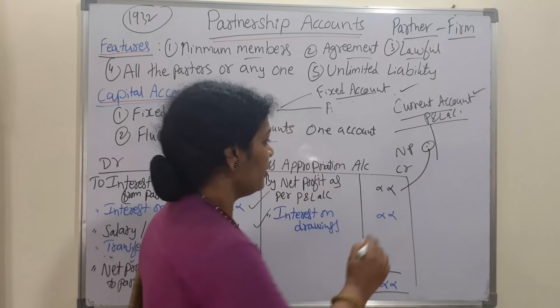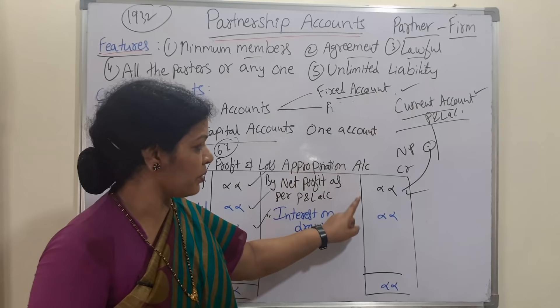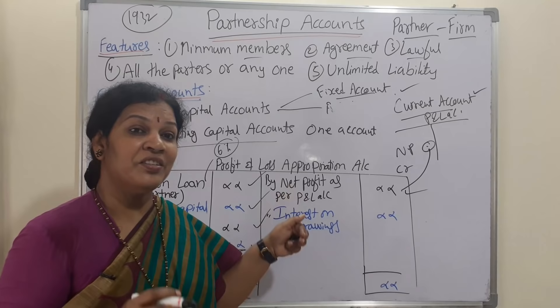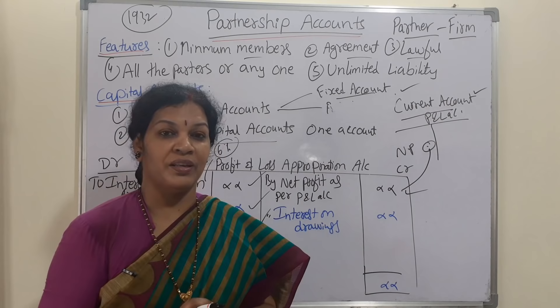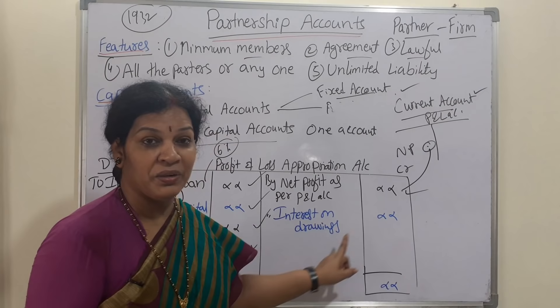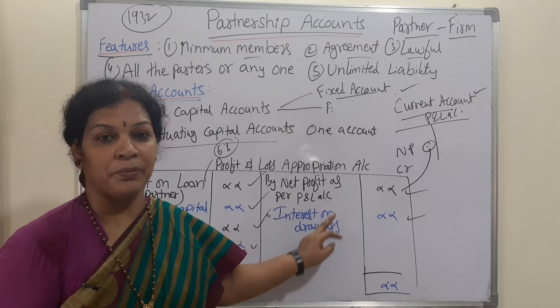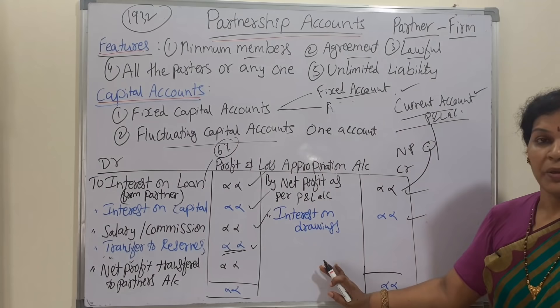On the credit side, apart from the net profit transferred from the P&L account, we have only one transaction — interest on drawings. This is an income for the partnership firm. If any partner draws money from the firm, say 10,000 rupees, we charge interest on that drawing. So only one transaction comes on the credit side besides the net profit.